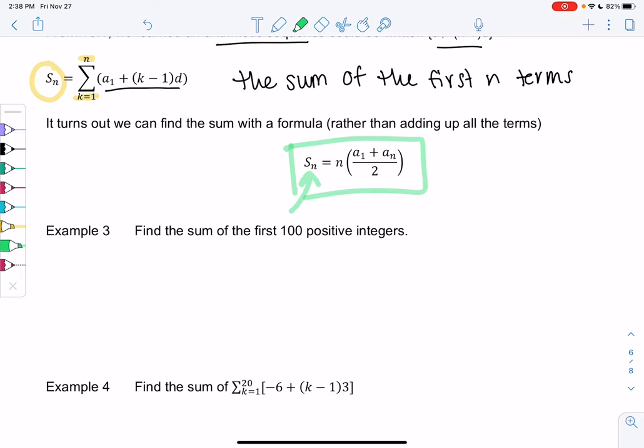If I want to find the sum of the first 100 positive integers, that means I'm doing 1 plus 2 plus 3 all the way up to 99 to 100. We could do that, but do you really want to type 100 numbers on your calculator? So instead, we'll use this cool shortcut formula.